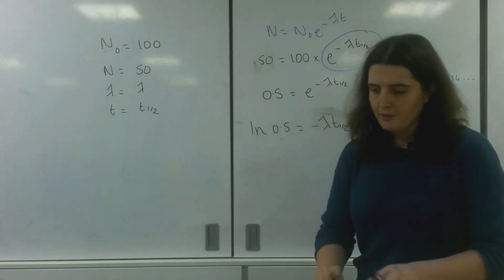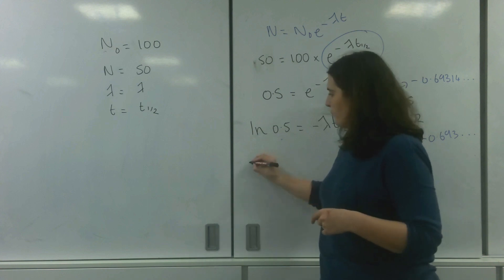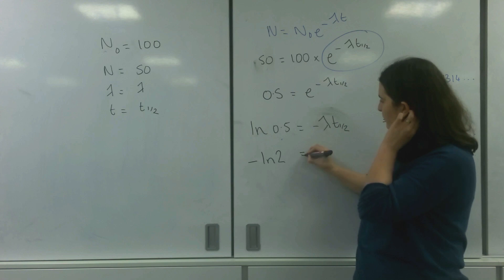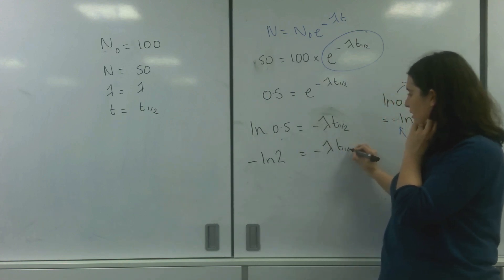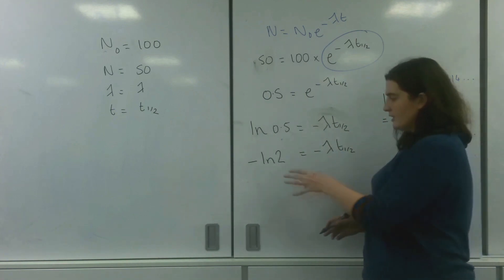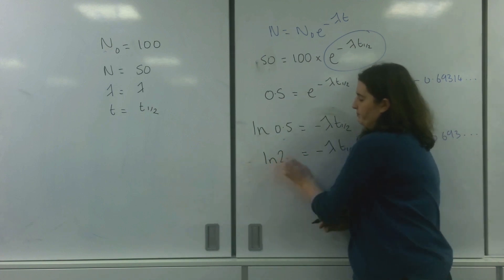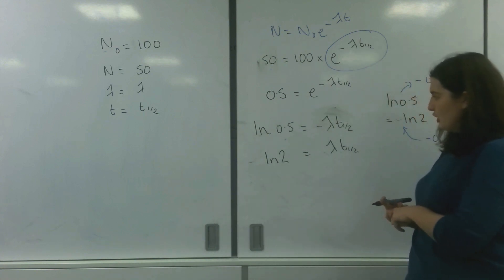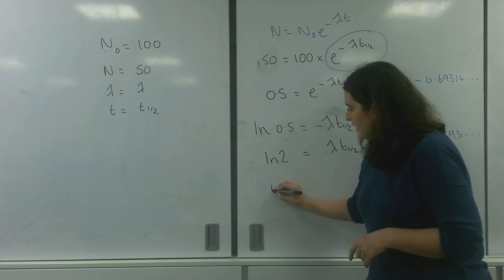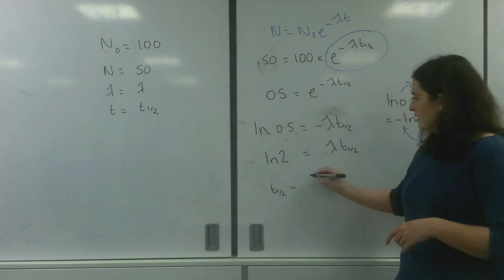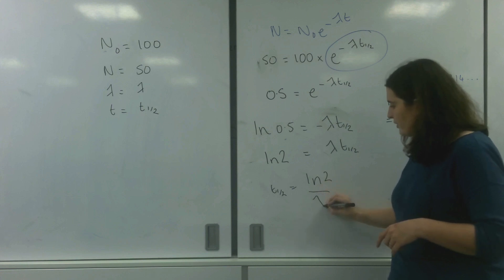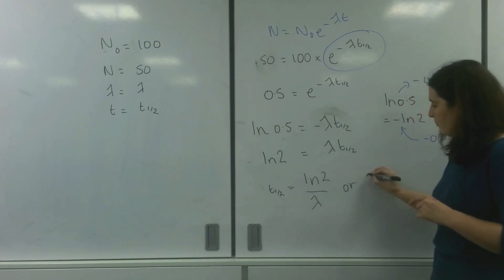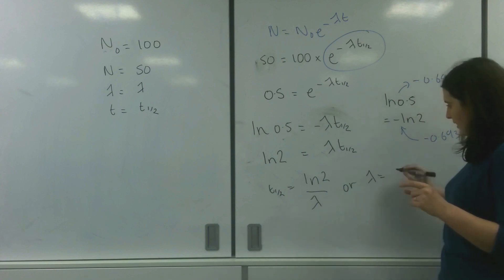So what I'm going to do now is I'm going to change this ln(0.5) to minus ln(2). Equals minus lambda t_1/2. And as you can see, these two negatives are going to cancel each other out. So now I have got a formula that I can use to have t_1/2 equals ln(2) over lambda, or my decay constant is ln(2) over the half-life.